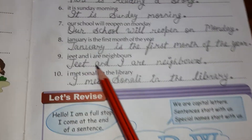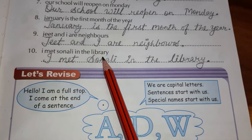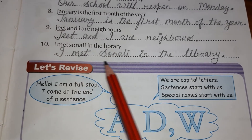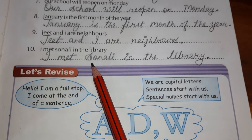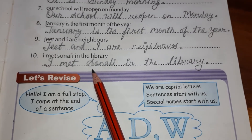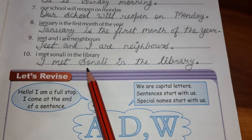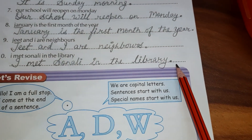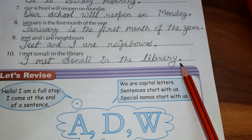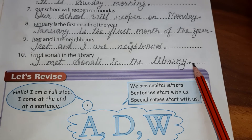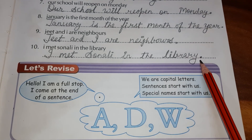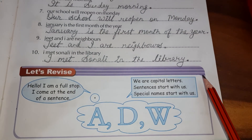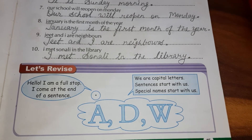Now come to the last sentence: 'I met Sonali in the library.' So I should be capital, and S should be capital because Sonali is the name of a person. And at the end of the sentence, we will put a full stop. In this way we will do this whole exercise. I hope all of you have understood it very well. Thank you and have a nice day.